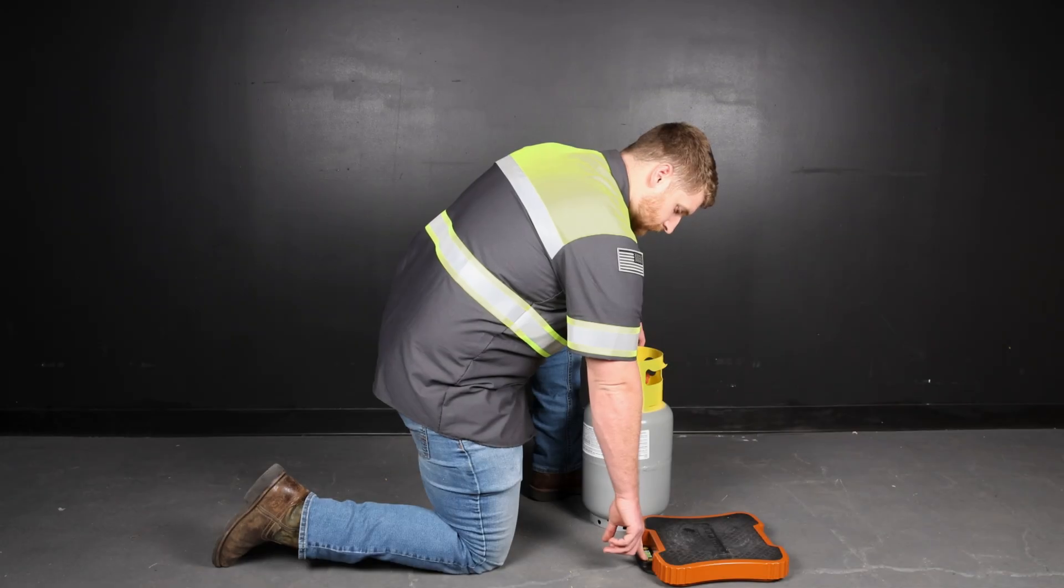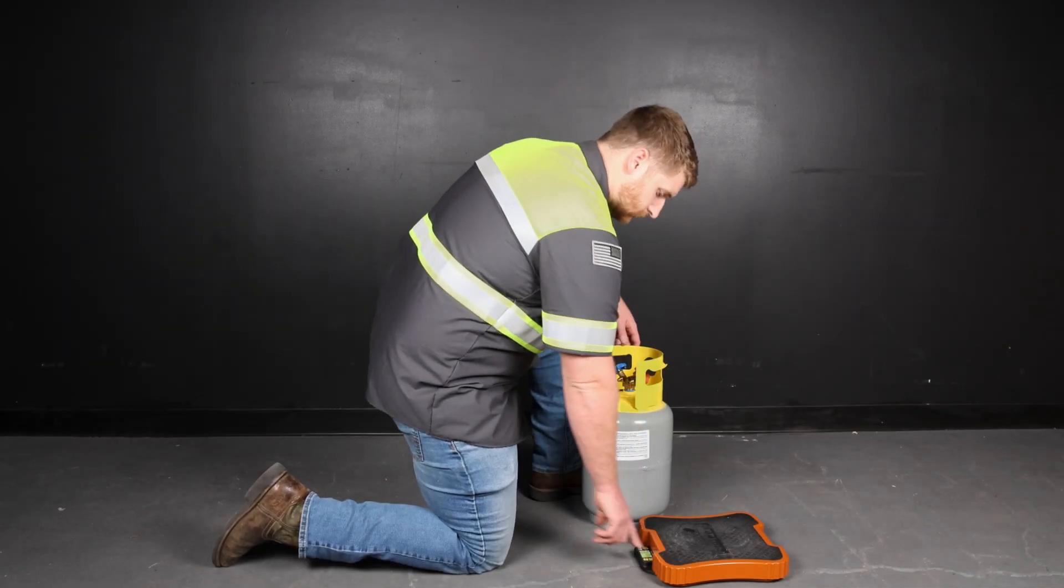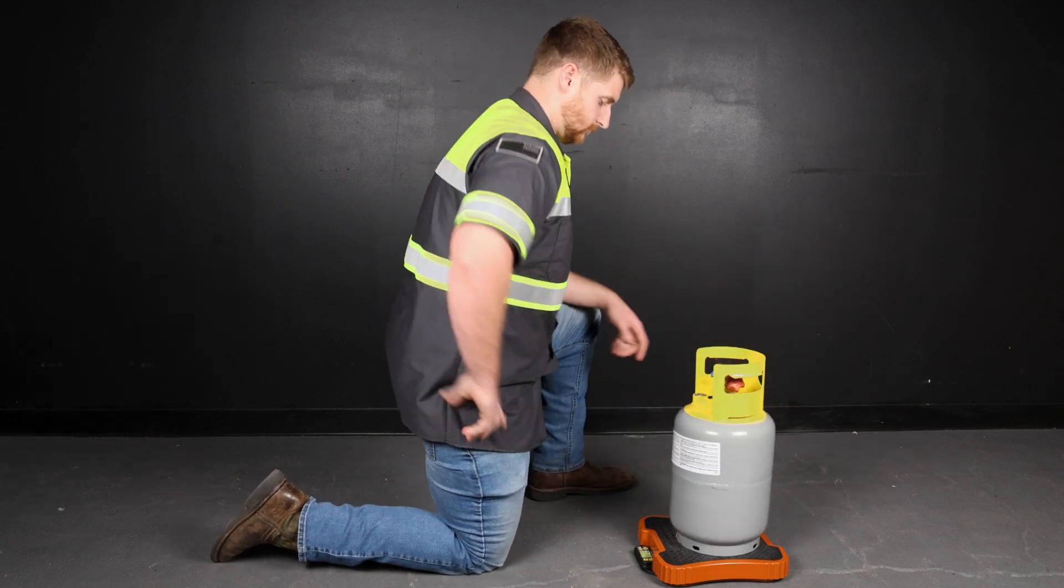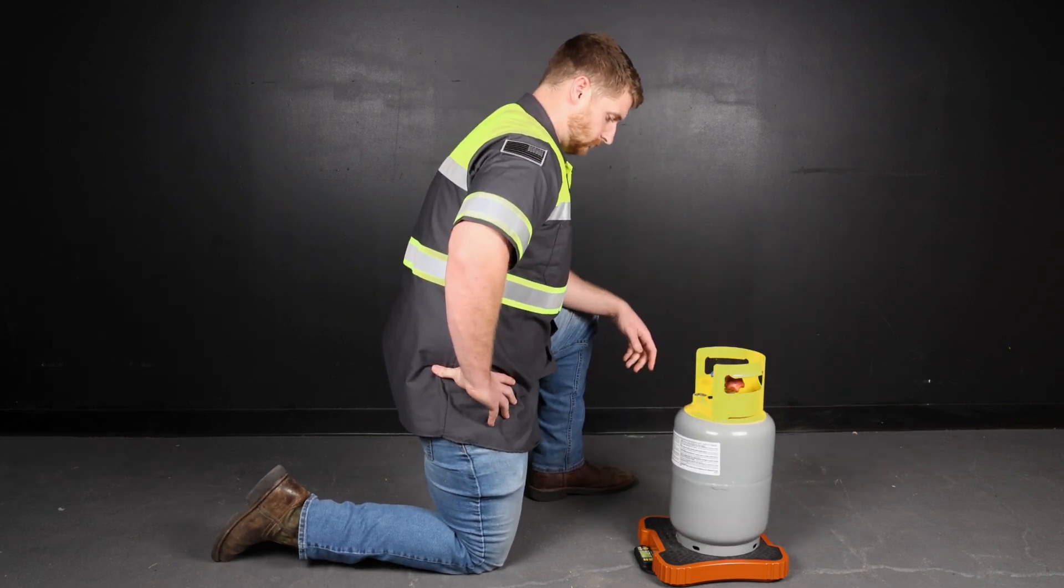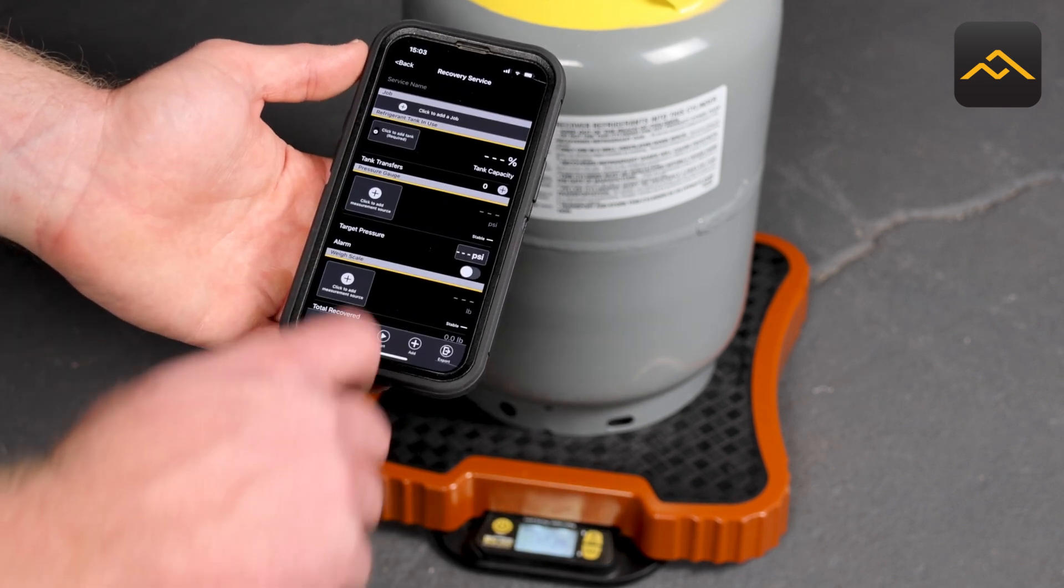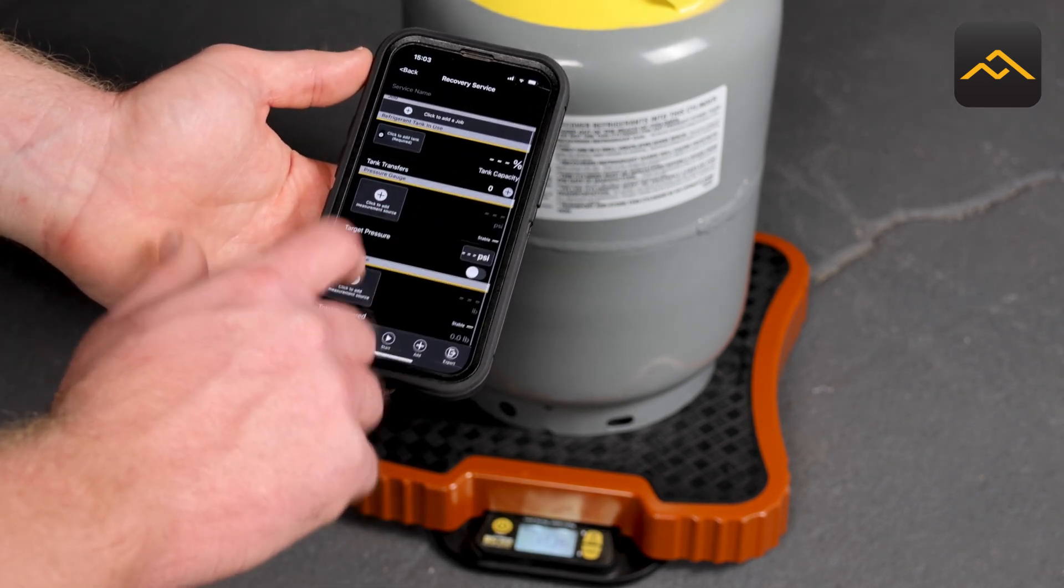Using a high-accuracy refrigerant recovery scale along with pressure temperature charts will help you safely fill the cylinder. In addition to these tools, HVACR service apps, like the Appian Central app, can help you understand the safe cylinder capacity for each refrigerant you might be working with.